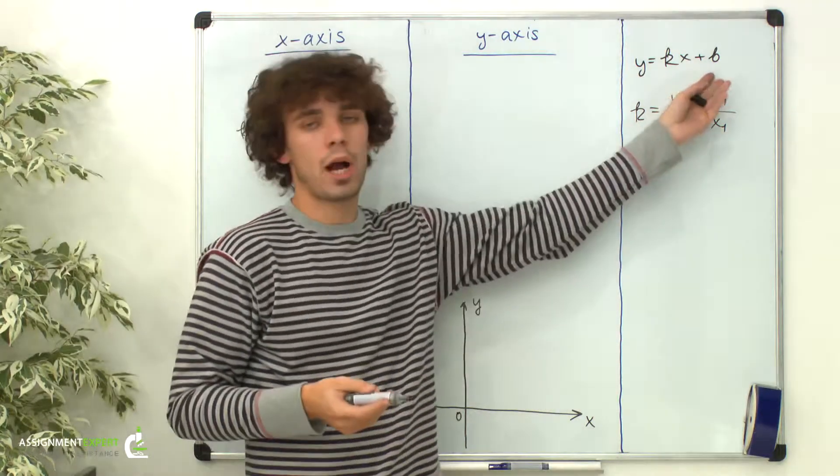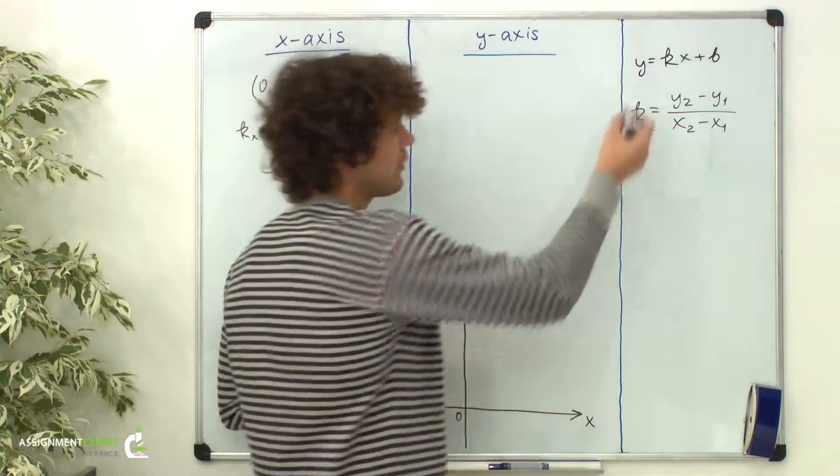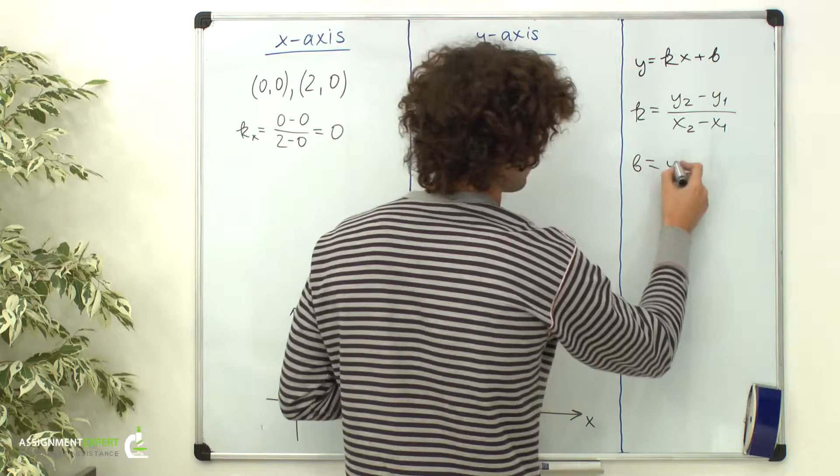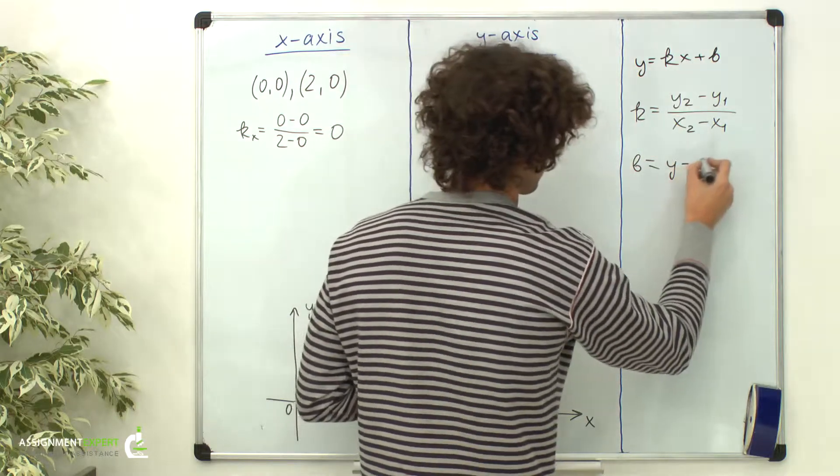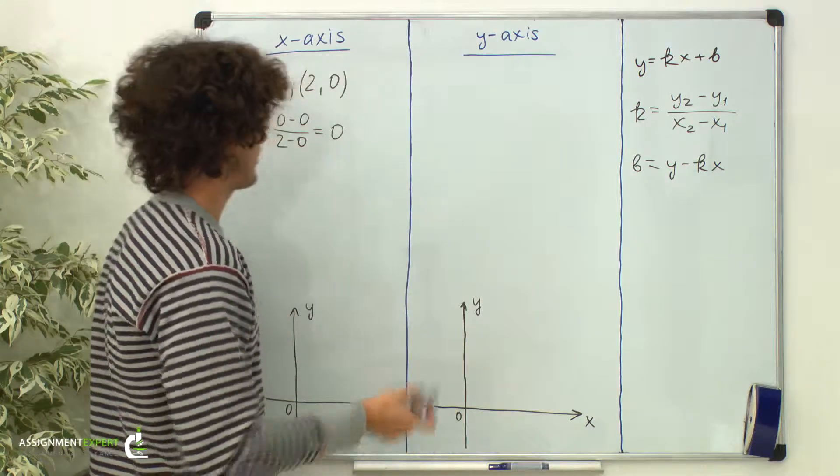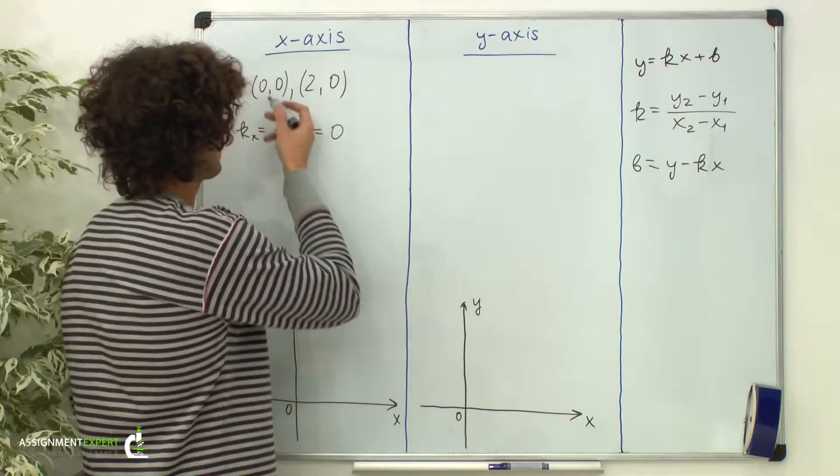Now we need to find the y-intercept. We can derive it from this equation: b equals y minus kx. To find b, we can pick any point. Let's pick (0,0).